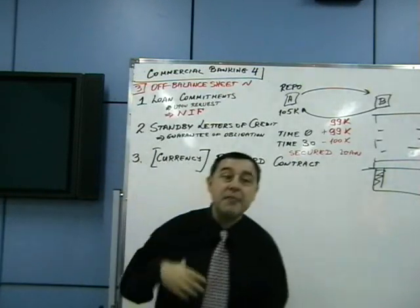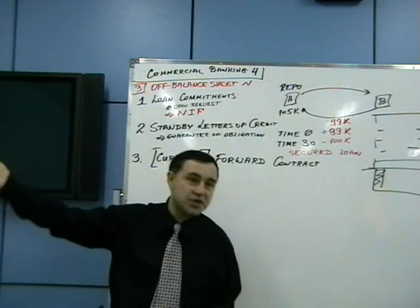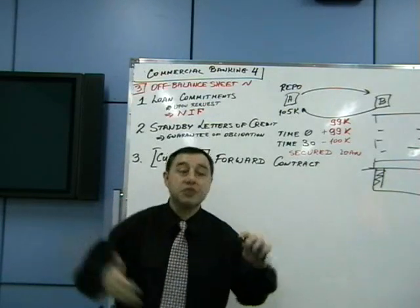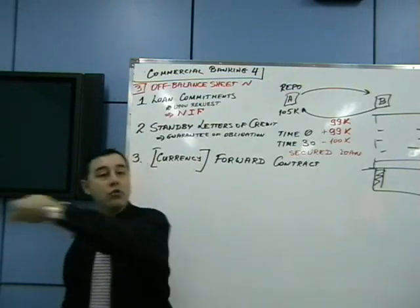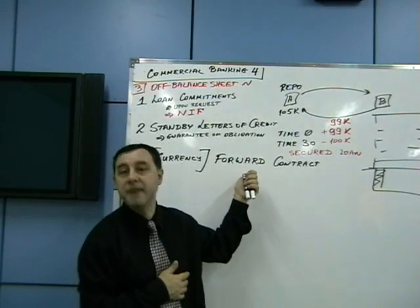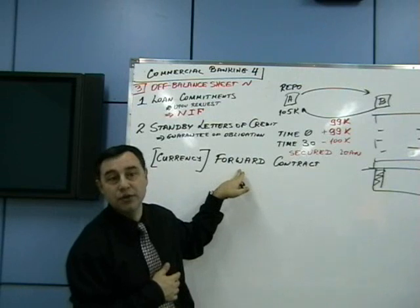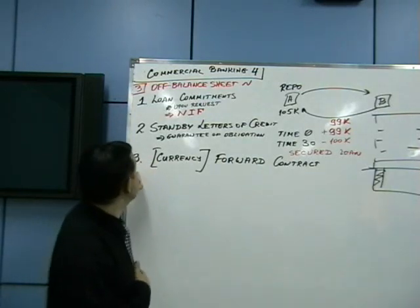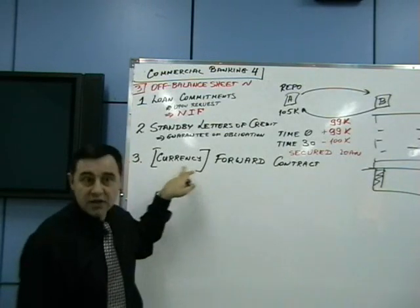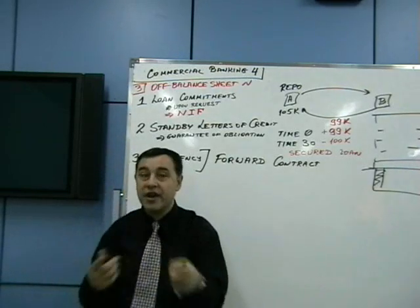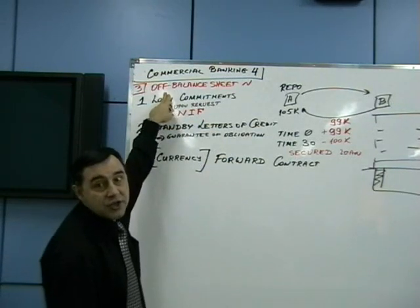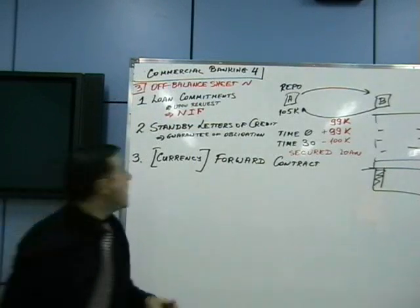The bank will assume a small currency risk, and when the risk exceeds a certain threshold, they go on the futures market and hedge it. They collect fees for those commitments. The key point is that a forward contract is a commitment to execute in the future — there is no cash flow today, so there is no accounting record today. It is therefore off-balance-sheet.